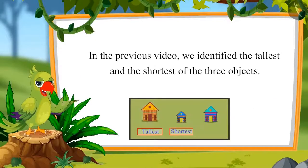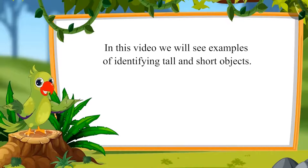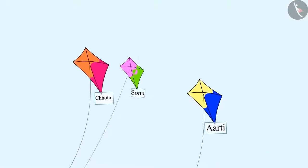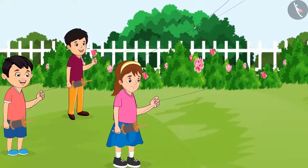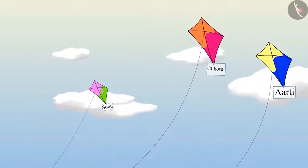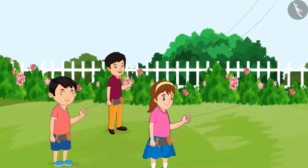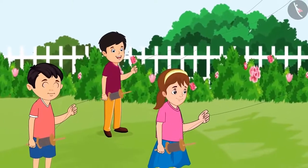In the last video we identified the tallest and the shortest of three objects. In this video we will see examples of identifying tall and short objects. Today Chotu, Aarti, and Sonu have come to fly kites in the park. Today my kite will fly the highest! Okay, let's see. When the three of them were flying kites, Chotu said — look, my kite is flying high!